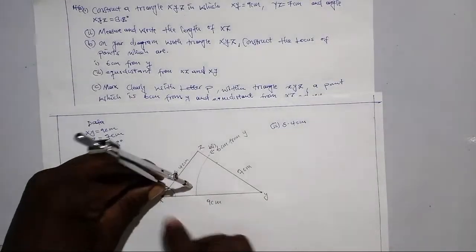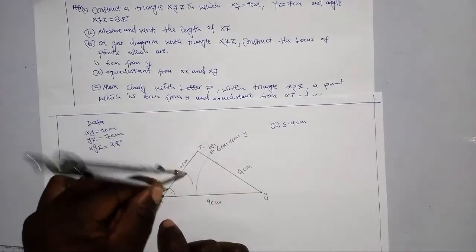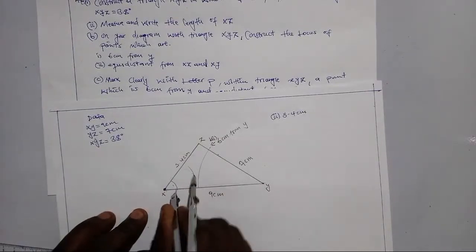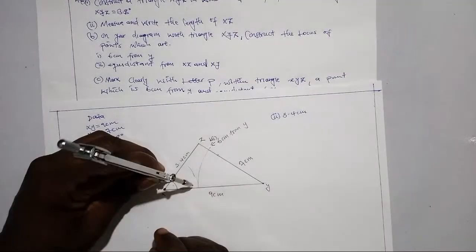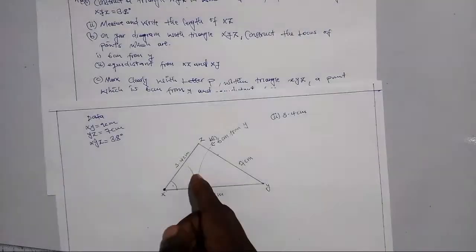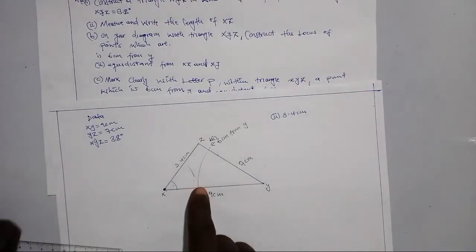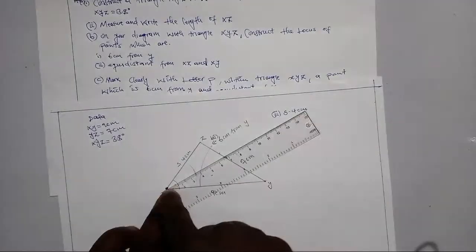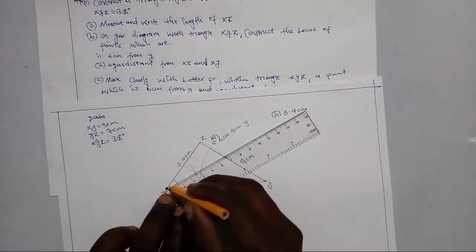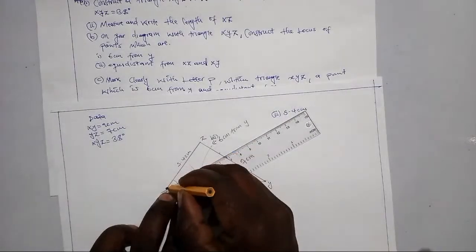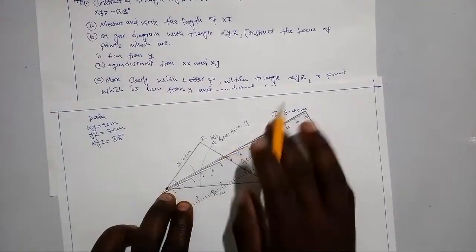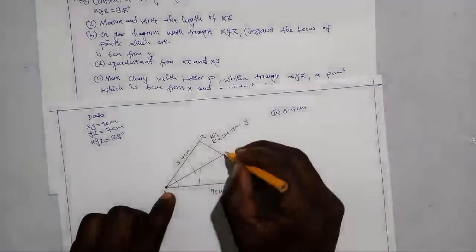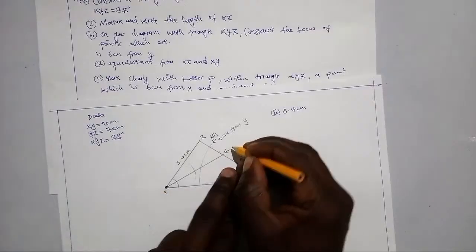Strike an arc from X onto both lines. Then open the compass a little more and strike arcs from the ends of those lines so they intersect. Where the construction arcs meet, draw a line from X through that intersection. This is the angle bisector — the locus equidistant from XZ and XY.